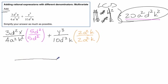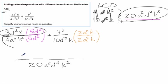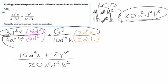Now we've got the common denominator: 20a squared d squared k squared. We just multiply these numerators. These two give 15d to the fourth x, and these two give plus 2y cubed a squared k. And that's all there is to it.